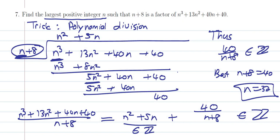Any questions on this solution? I think this is the quickest way to solve this question. The trick is polynomial division, and you want 40 over n plus 8 to be an integer.